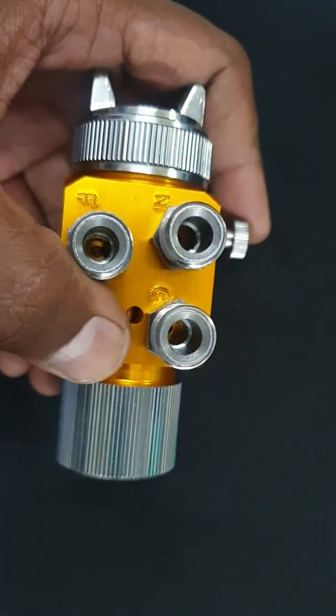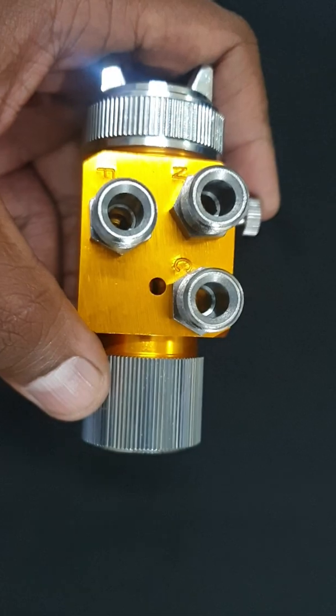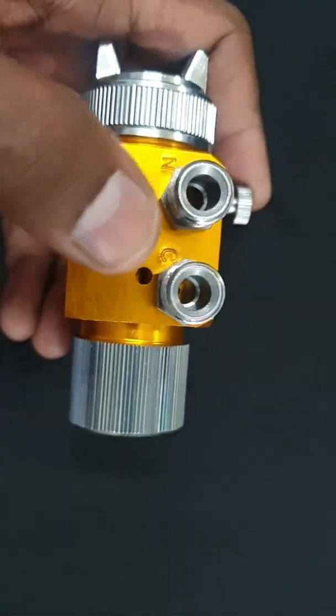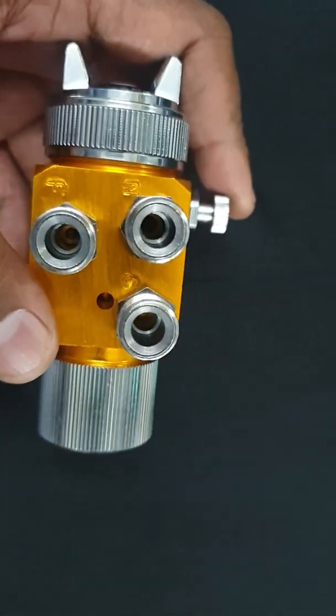C is the cylinder, that we call the pistol, for controlling gun on-off operation.